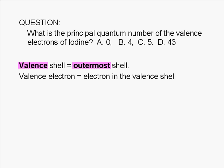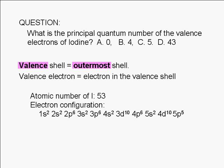If we look up iodine, we'll find that its atomic number is 53, and its ground state electron configuration is 1s², 2s², 2p⁶, 3s², 3p⁶, 4s², 3d¹⁰, 4p⁶, 5s², 4d¹⁰, 5p⁵.